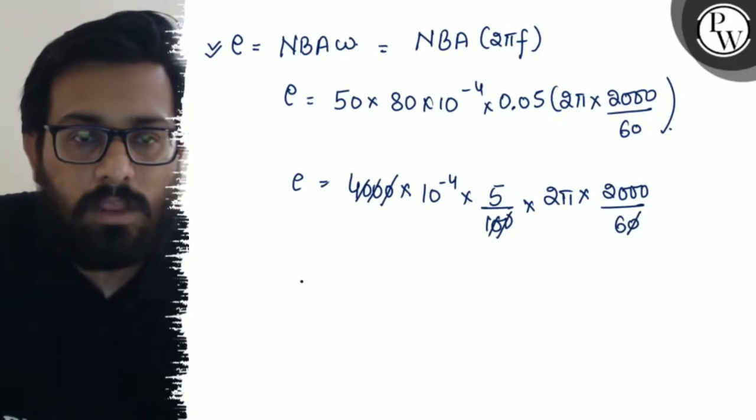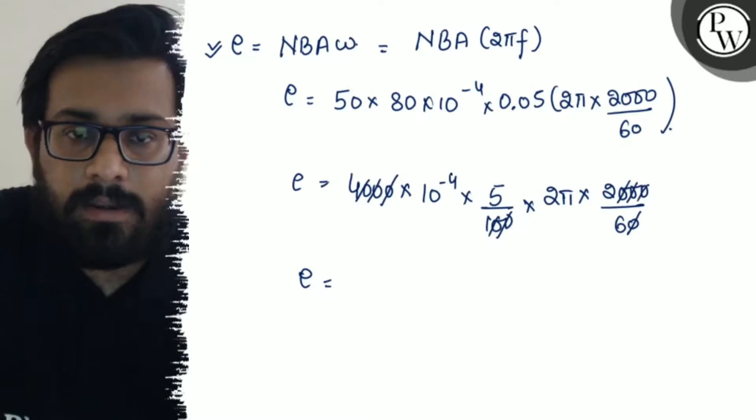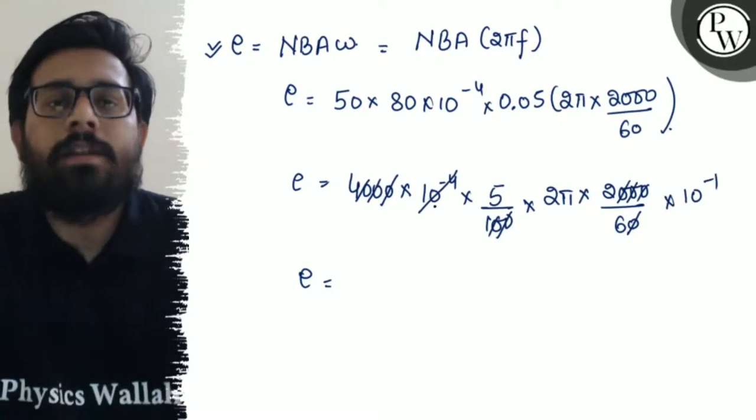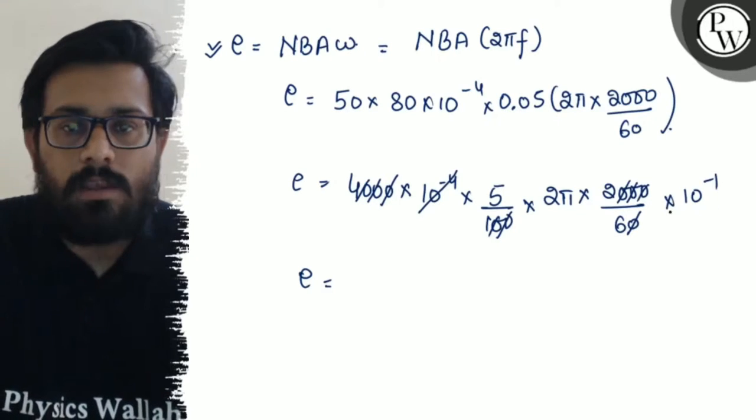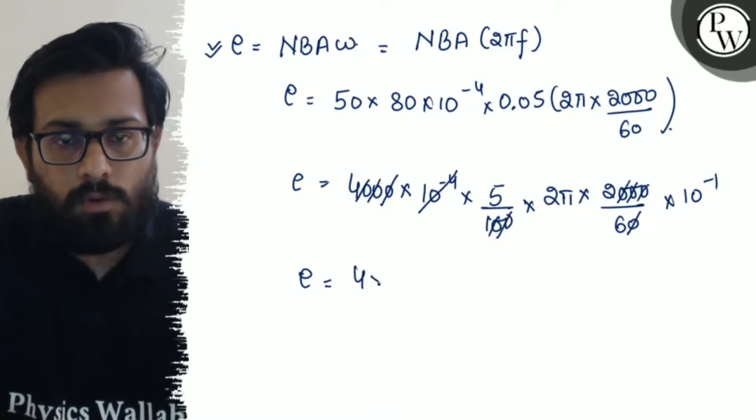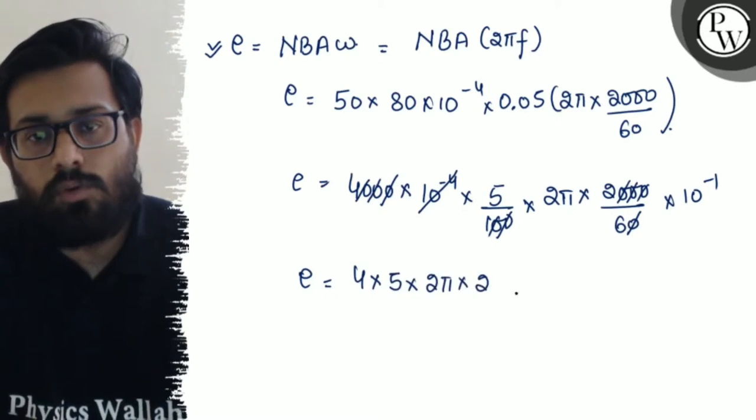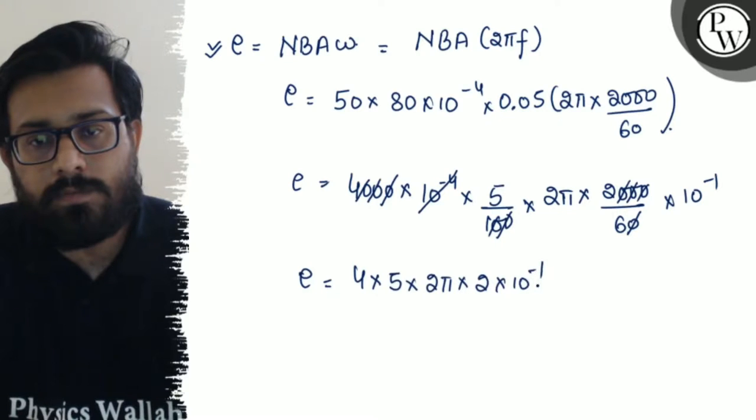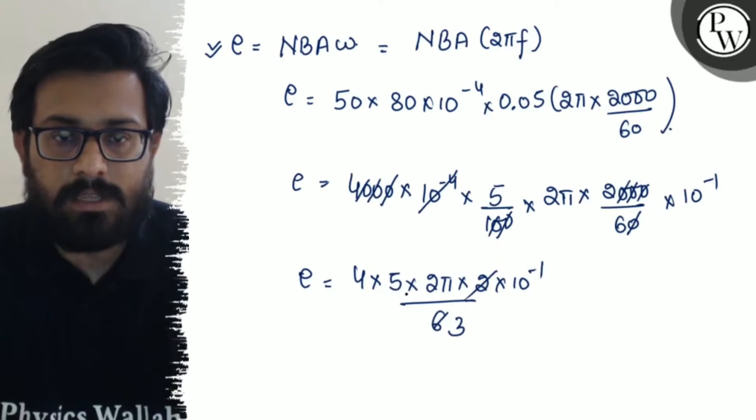Now we have the value E as 10⁻¹. 10⁻⁴ and 10³ cancel to give 10⁻¹. Solving this: 4 × 5 × 2π × 2 × 10⁻¹ / 6. 2 × 3 is 6 and 5 × 2 is 10.